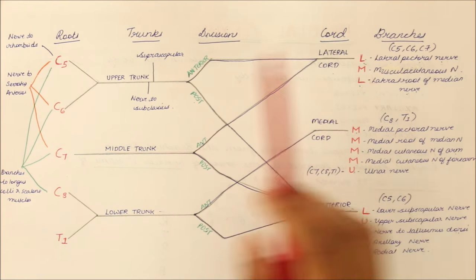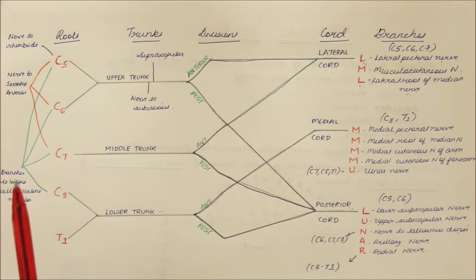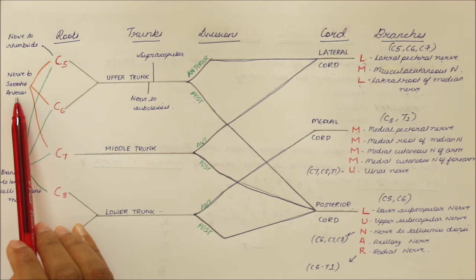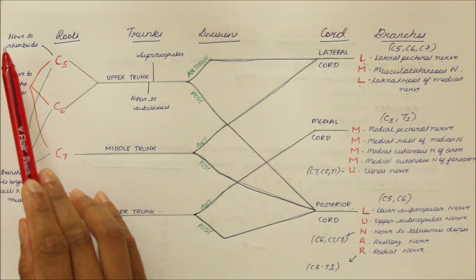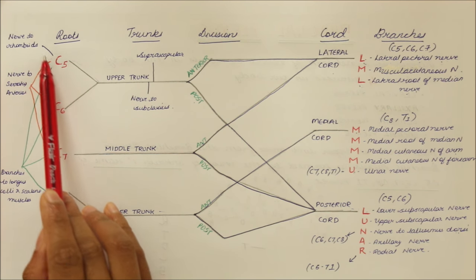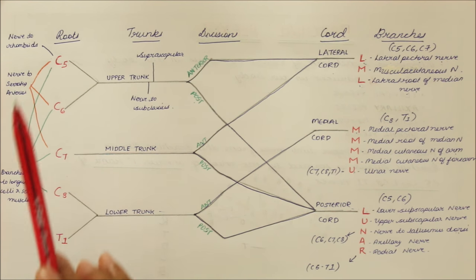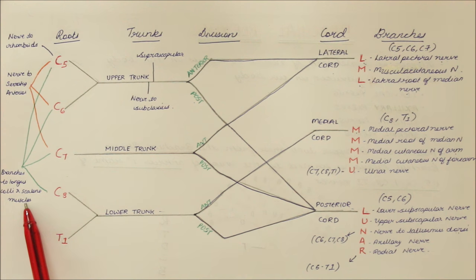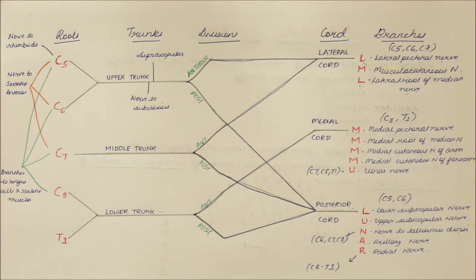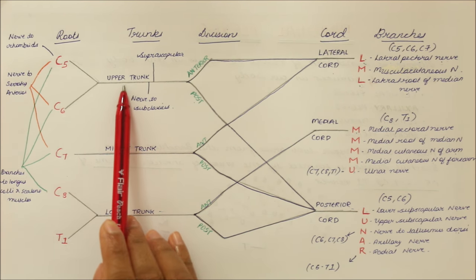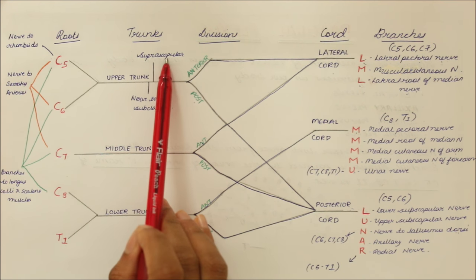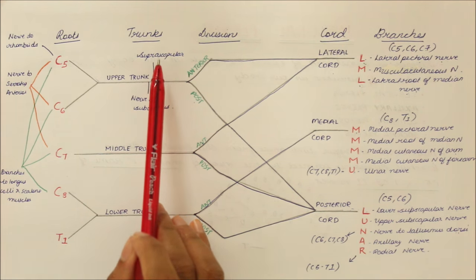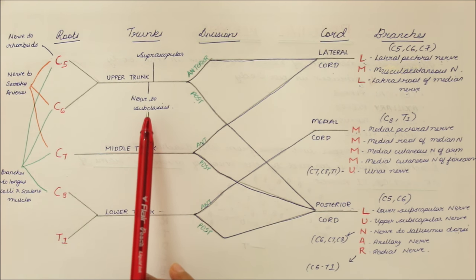There are some branches that arise from the roots and the trunks. The nerve to serratus anterior arises from the C5, C6 and C7 roots. The nerve to rhomboids arises from the C5 root. The branches to longus coli and scalene muscles arise from C5, C6, C7, C8 roots. From the upper trunk arise the suprascapular nerve (root value C5, C6) and the nerve to subclavius (root value C5, C6).